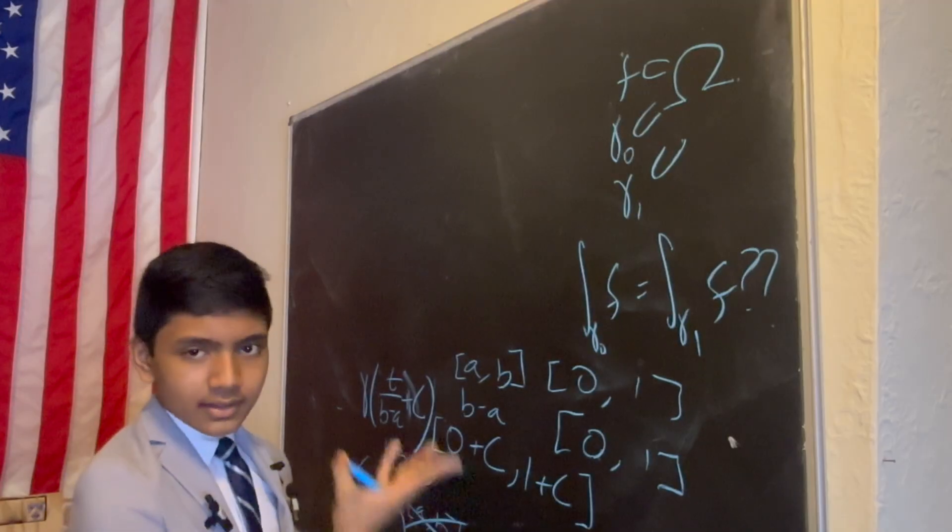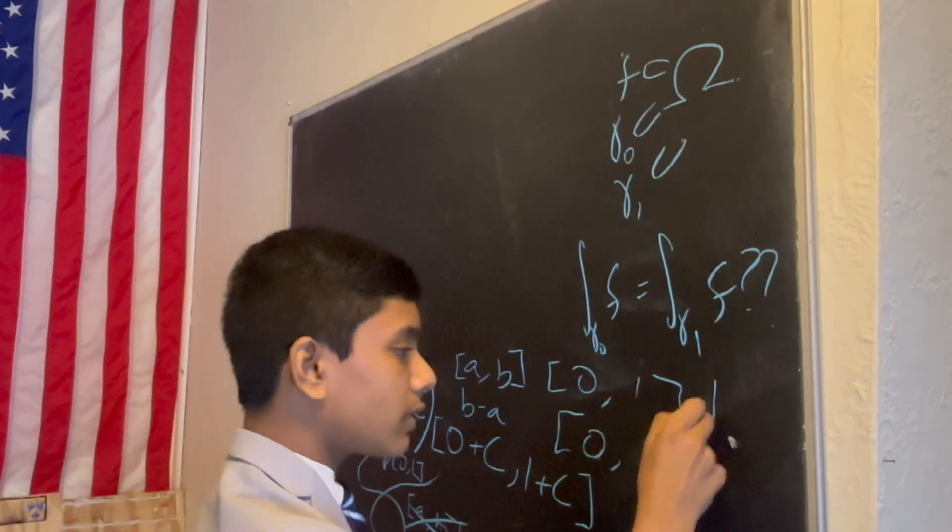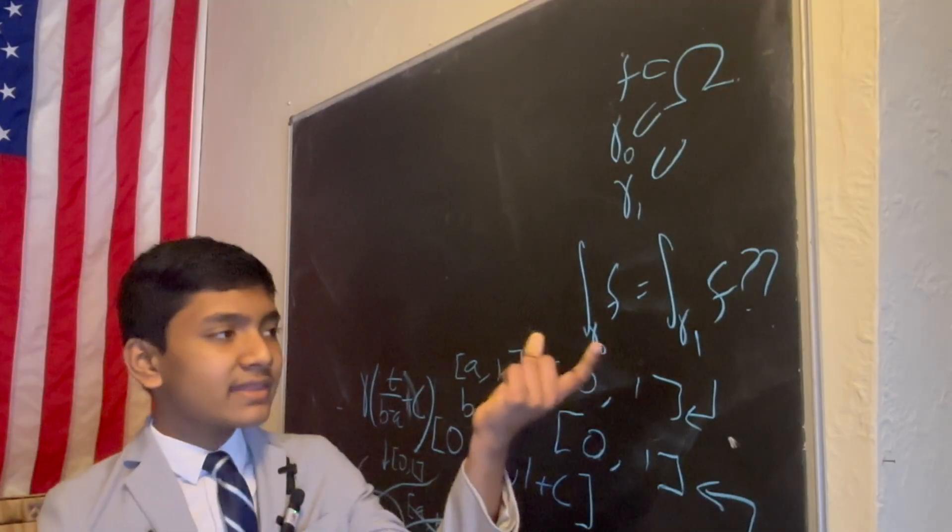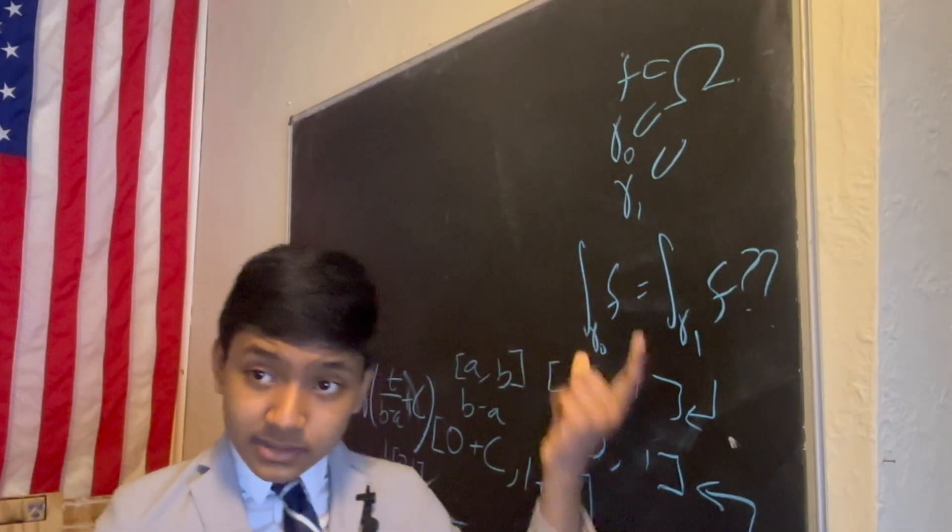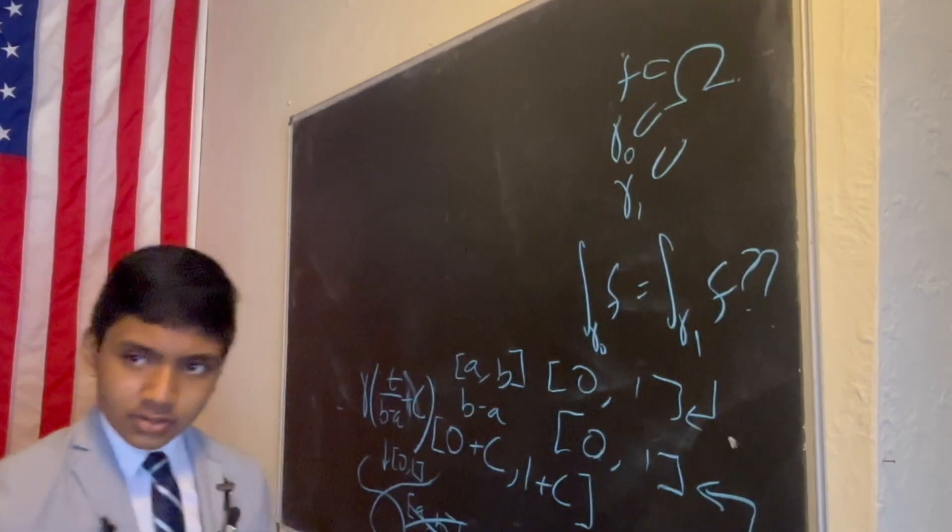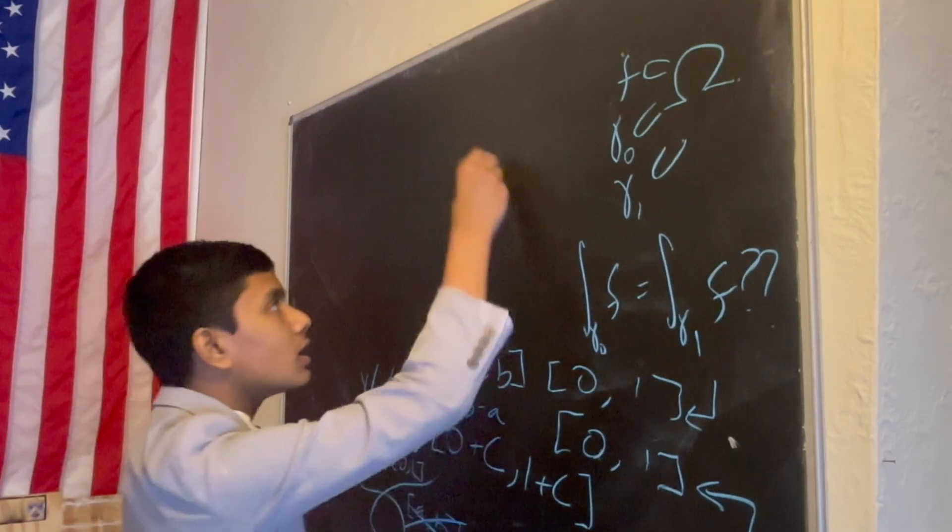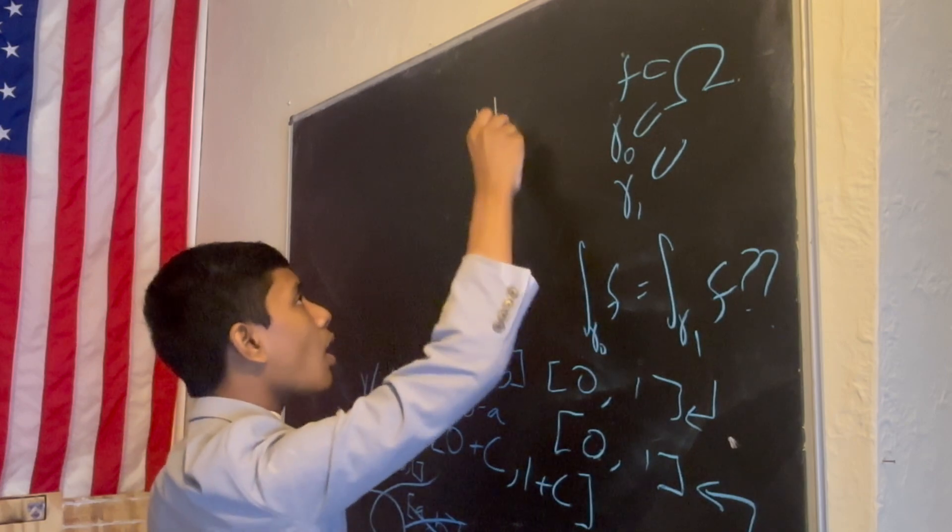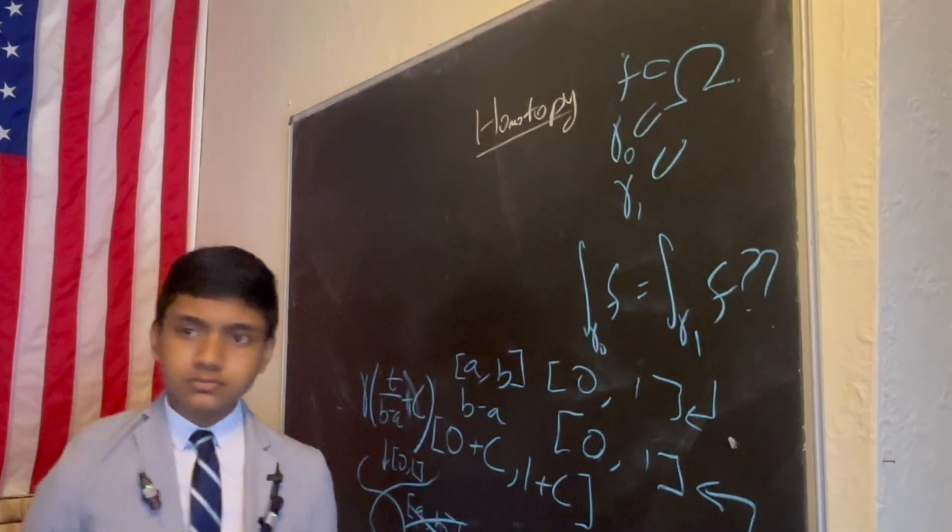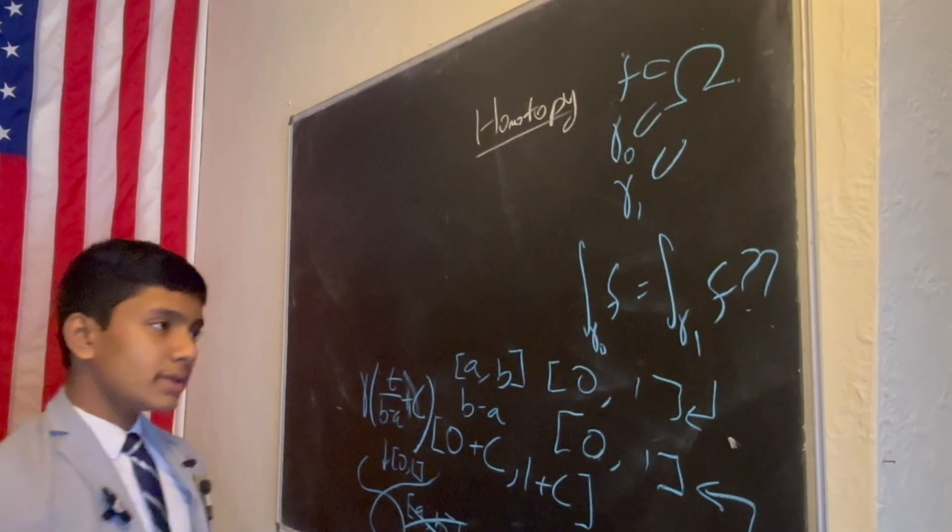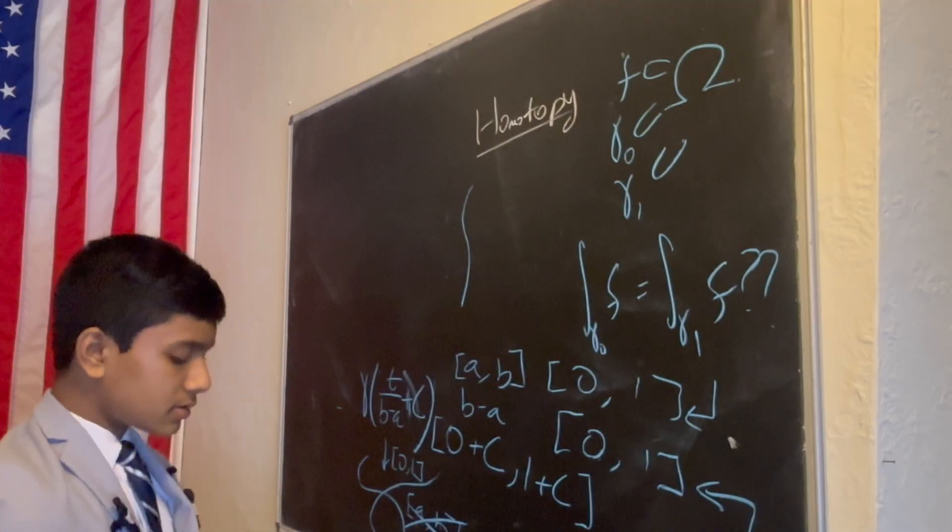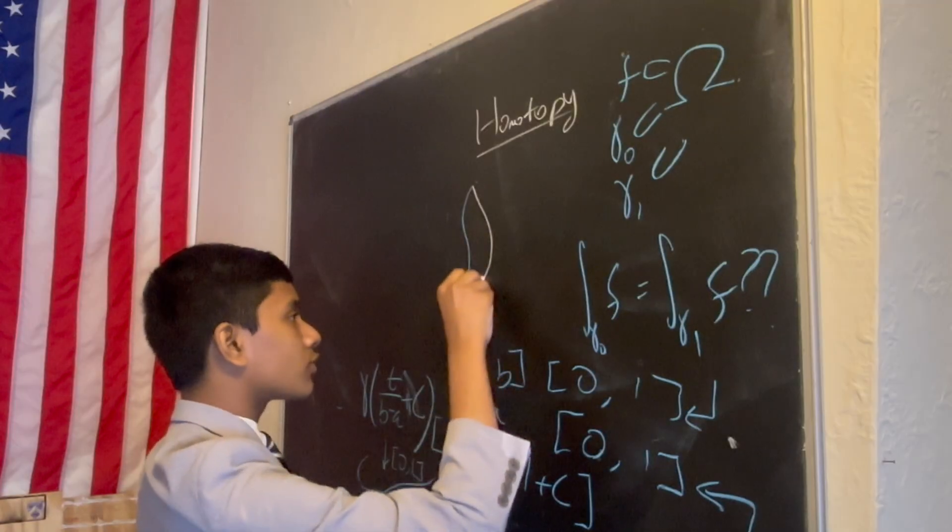So now, how do we know when two curves parameterized over 0 to 1 that the path integral of the holomorphic, which means the derivative exists, function will be the same? Well, we have to look for something called a homotopy. What is a homotopy? Well, it's essentially something that morphs curve 1 into curve 2.